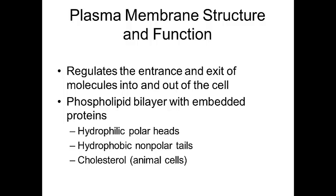The plasma membrane is made of phospholipids — phospho because there's a phosphate group, and lipid because it's made of lipids. Lipids is something we'll learn about in the next unit on biological molecules. It's a bilayer, which means two layers, and it has proteins embedded in it.